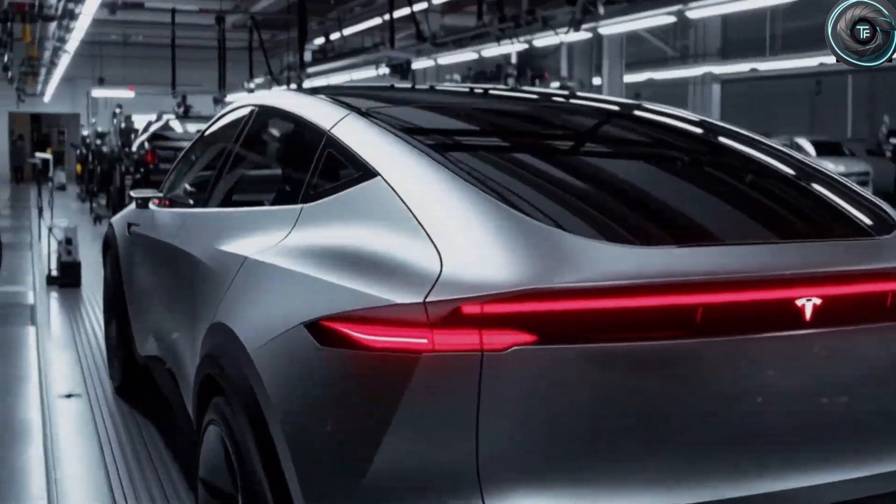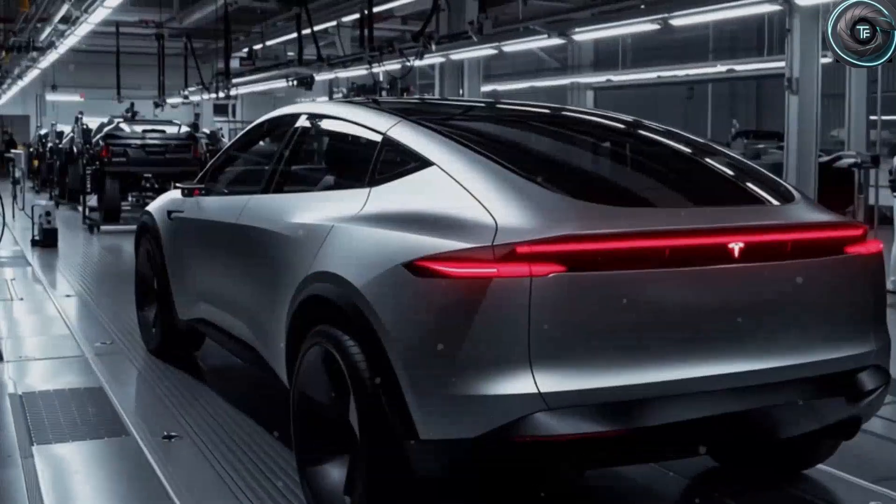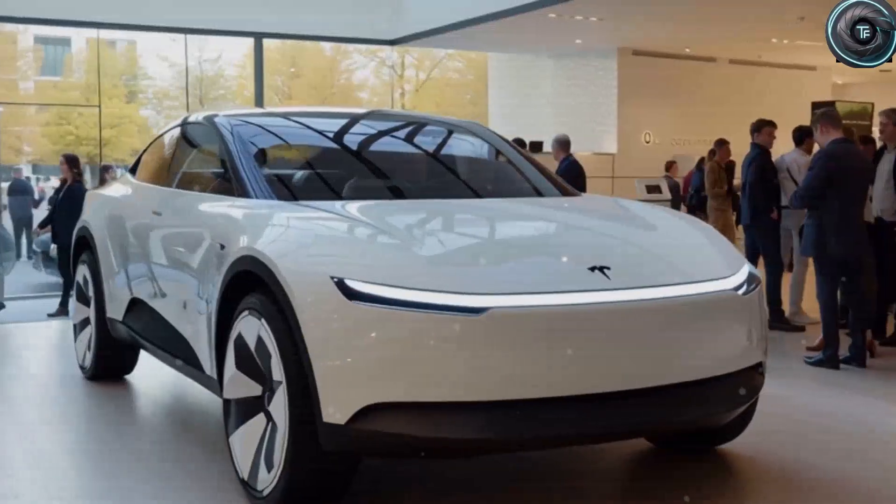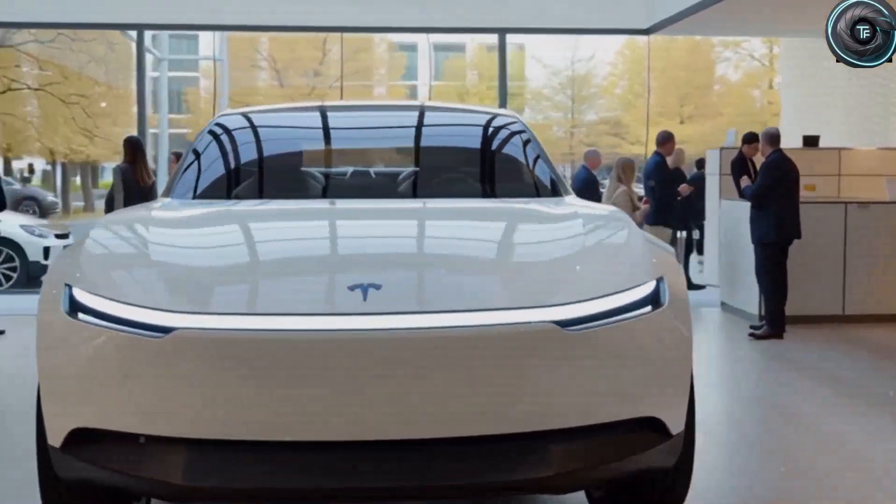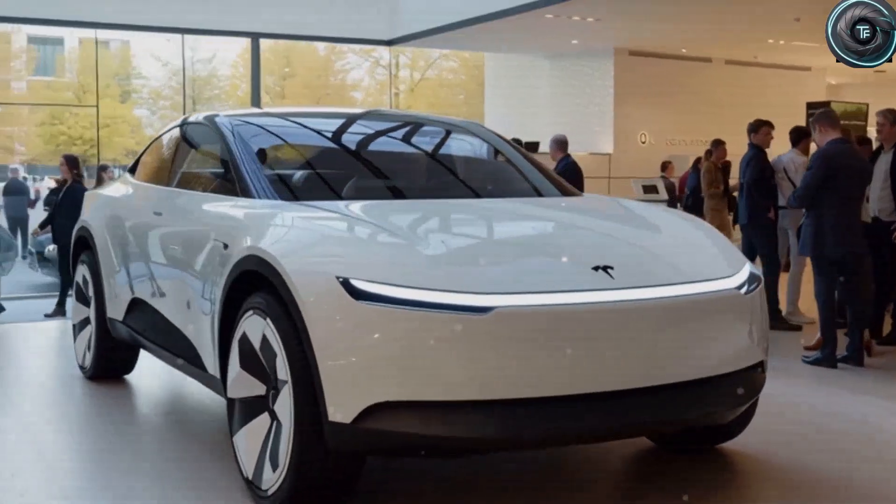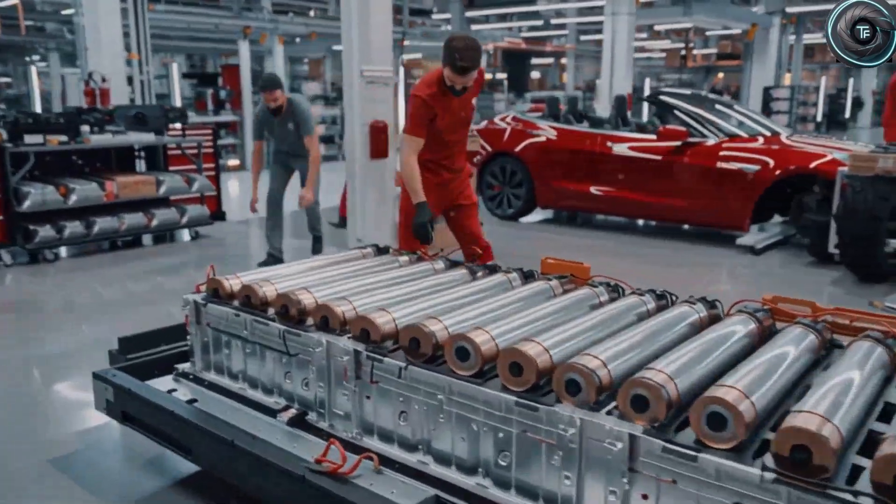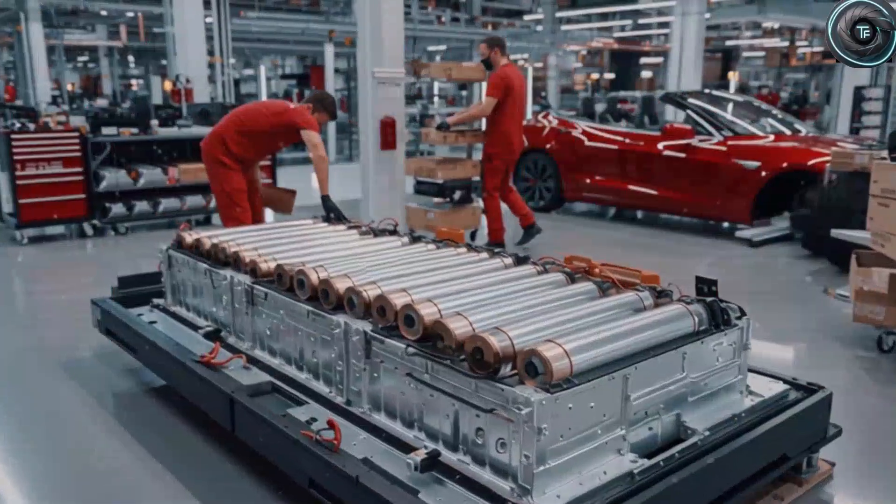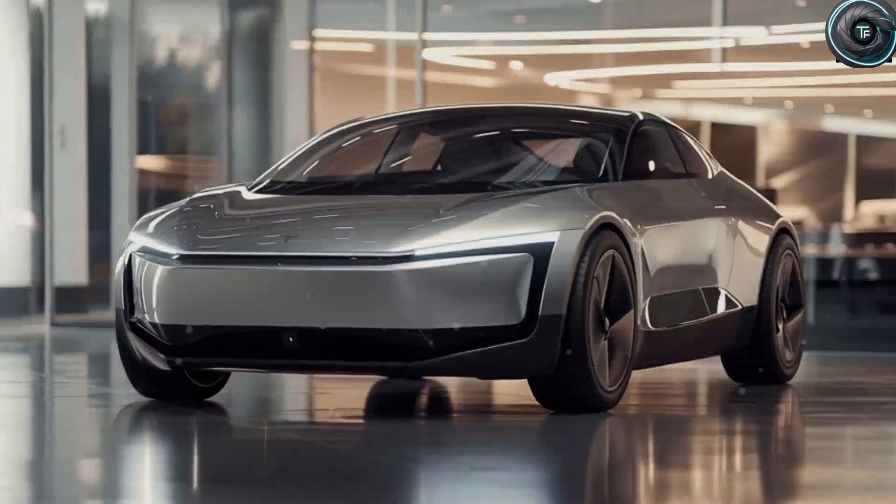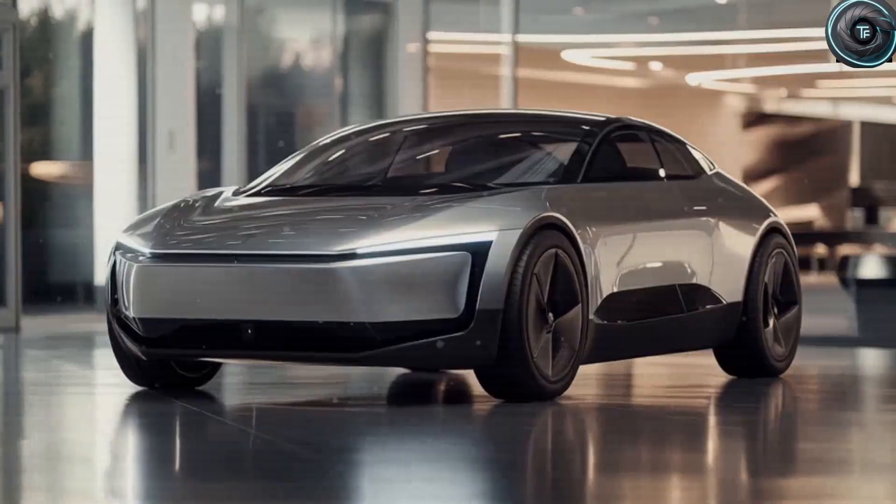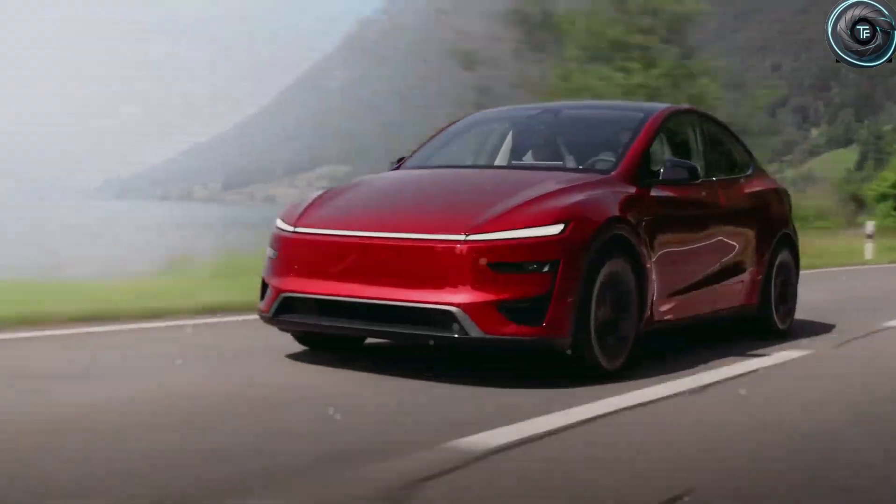So how exactly is Tesla pulling this off? The secret lies in a more stable electrolyte combined with improved cathode materials. In the cold, sodium ions move more easily than lithium so the battery does not slow down. In the heat, the materials resist breaking down, which keeps the pack safe and efficient, even at very high temperatures.